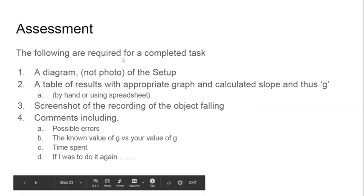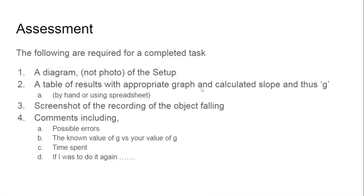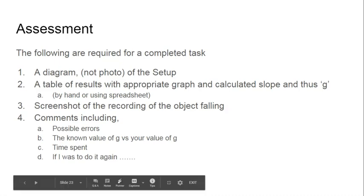For the assessment, the following are required: a complete diagram — not just a photo — of the setup; a table of results with an appropriate graph, calculated slope, and derived value of g (done by hand or spreadsheet); a screenshot of the recording showing the object falling; and some comments. The comments should mention sources of error — where measurements were inaccurate or imprecise — compare your value of g to the known value, and describe how much time the experiment took you.